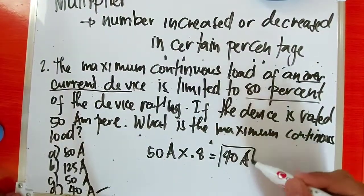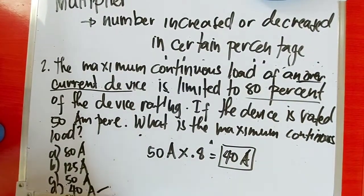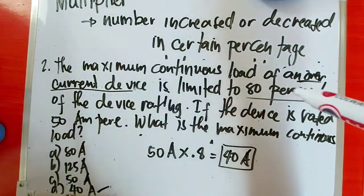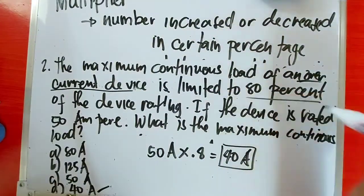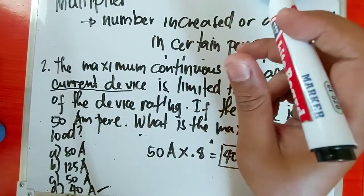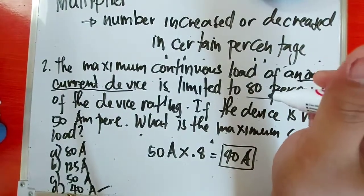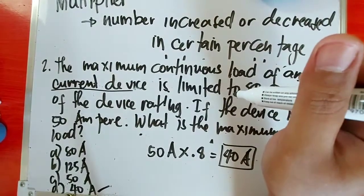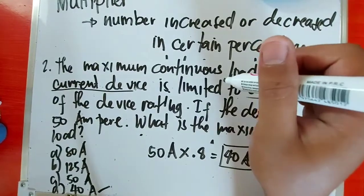Okay, so that's how easy it is to solve multiplier problems. Just remember, when it's maximum continuous load of an overcurrent device, it's limited to only 80% always. The 125% we mentioned earlier is when you're sizing your protection, your circuit breaker. Okay? If it's a continuous load, it needs to be times 125%.